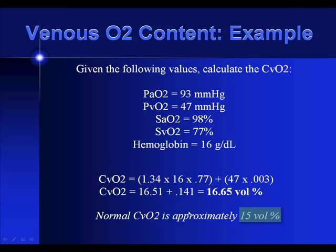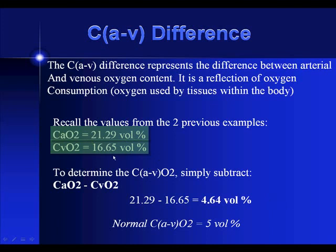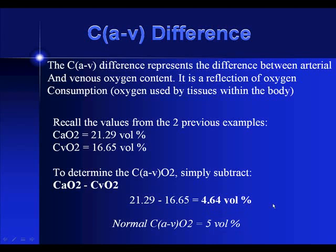The normal CVO2 is around 15, and the normal arterial O2 content is 20. Having both values, we can calculate the CaVO2 difference, which reflects oxygen consumption — what is used by the tissues versus what is returned to the lungs. Subtracting venous from arterial gives a difference of about 4.64 vol%, or milliliters per 100 milliliters of blood. The normal CaVO2 difference is around 5 vol%, since 20 minus 15 equals 5.